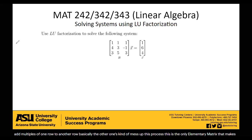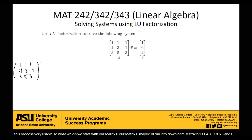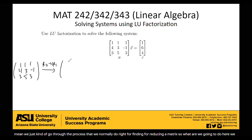So we start with our matrix B: 1, 1, 1; 4, 3, negative 1; 3, 5, 3. We go through the process of reducing the matrix. We want a 0 underneath our 1 in the top left, so we take row 2 minus 4 times row 1.